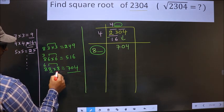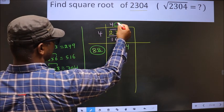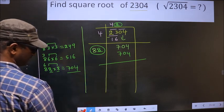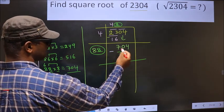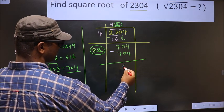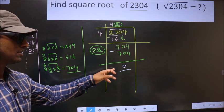For the number 8. So here we take 8. And here also 8. And here 704. Now we should subtract. So 704 minus 704 we get 0. We got 0.